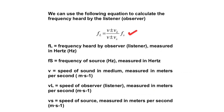This is the equation we use to calculate the frequency heard by the listener. FL is the frequency heard by the listener, or the frequency observed, measured in hertz. FS is the frequency of the source — the frequency emitted by the source — also measured in hertz. V is the speed of sound in the medium, measured in meters per second. Usually we are talking about the speed of sound in air, which is about 340 meters per second, but it will depend on the question. In special cases, we may be talking about the speed of sound in water, which is much more than 340 meters per second.